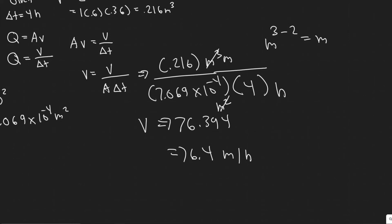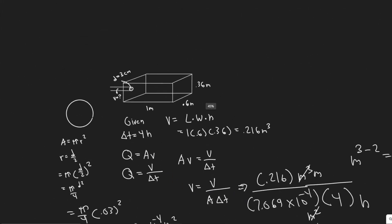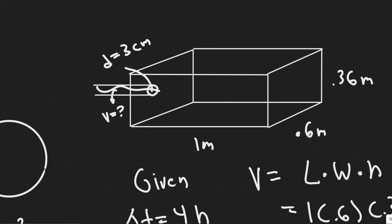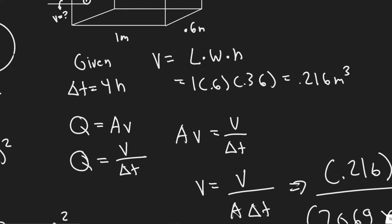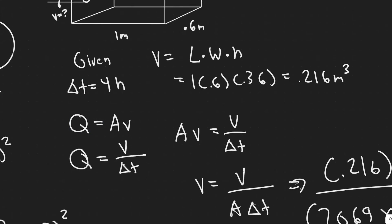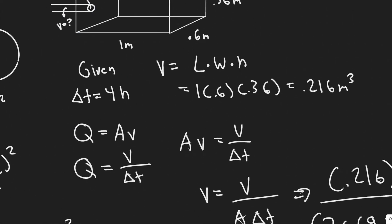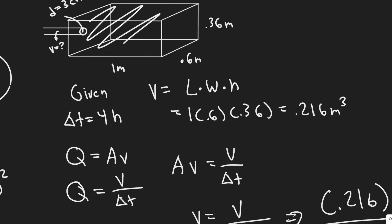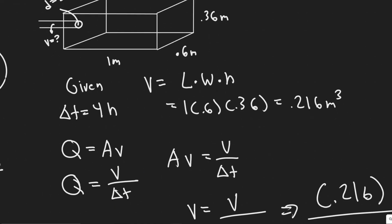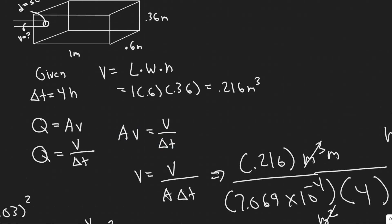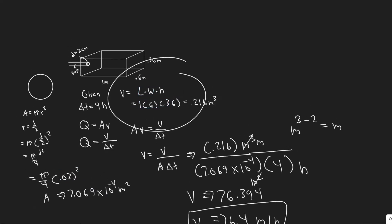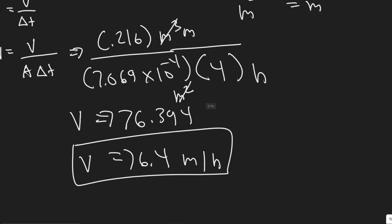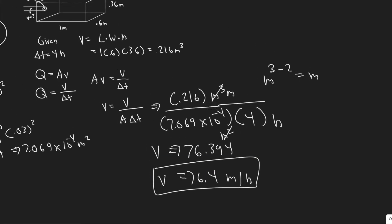You can convert the units to something else if you'd like, but 76.4 meters per hour is the velocity of the water in this tube — that's your answer. Quick rundown: we used the formula for flow rate, the continuity equation, which says flow rate equals A×V — cross-sectional area times the velocity of the water in the tube. We set that equal to the entire tank volume divided by 4 hours, then divided by A to solve for V. We found each value using the volume formula and the cross-sectional area formula.